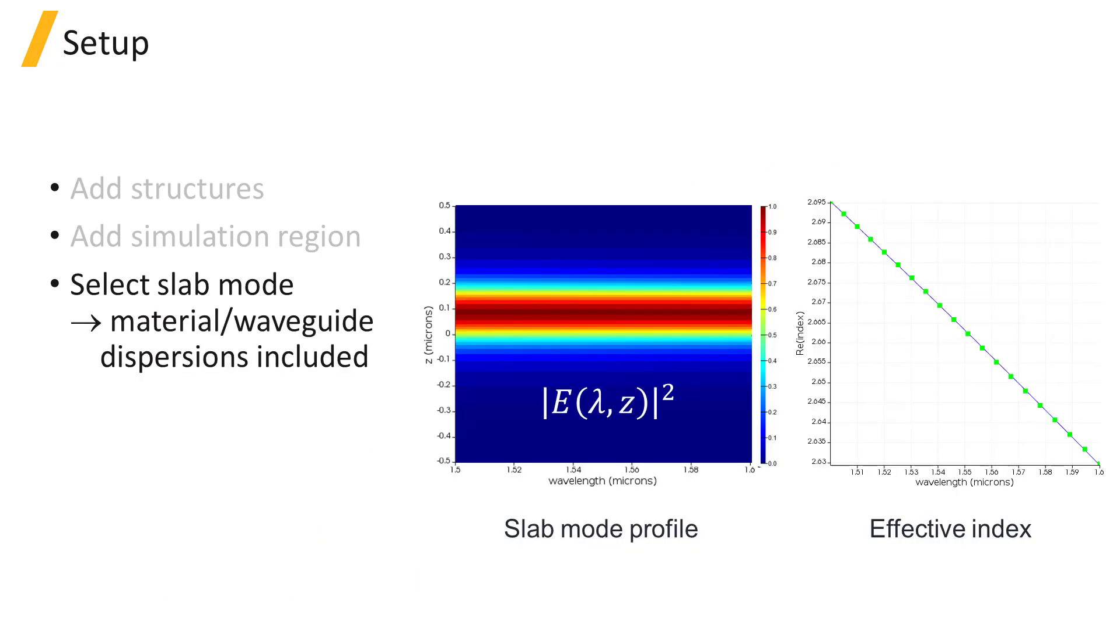For broadband simulations, we can calculate the slab mode profile as a function of wavelength, and the effective material properties are calculated over the broadband range allowing the simulation to account for material dispersion and waveguide dispersion.